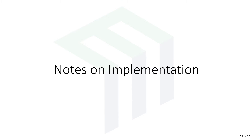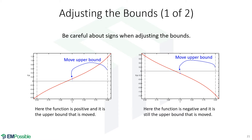Notes on implementation. Let's think about adjusting the bounds more carefully. We said if the function value is positive, the root is to the left of the guess — but that's only true if the slope is positive. For a function with a negative slope, a negative function value also means the root is to the left. So in both cases the root is to the left, even though the function has opposite sign. We have to account for the slope of the function in addition to the sign at the new guess.